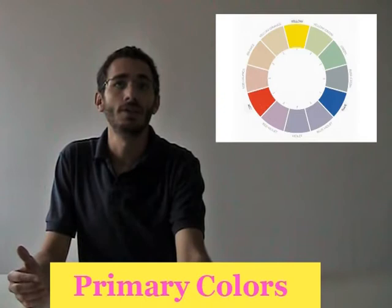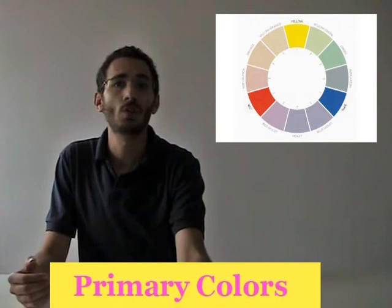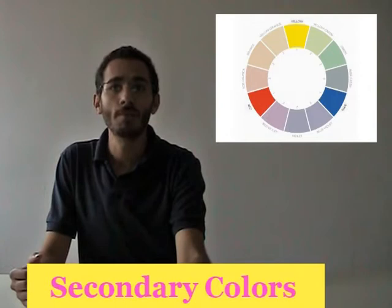These are called the primary colors because these three colors are the building blocks of the color wheel and cannot be created by mixing any other hues. On the color wheel, the primary colors are represented by the number 1.